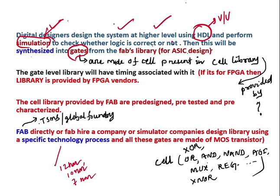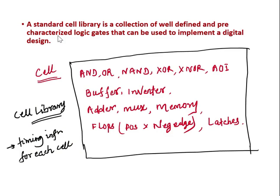The synthesis maps the design into gates from the foundry library for ASIC design. These gates are made up of cells present in a cell library. A standard cell library is a collection of well-defined and pre-characterized logic gates that can be used to implement a digital design. These basic gates or components are present inside the cell library.